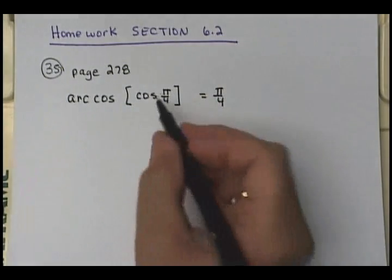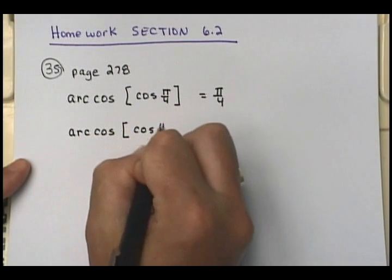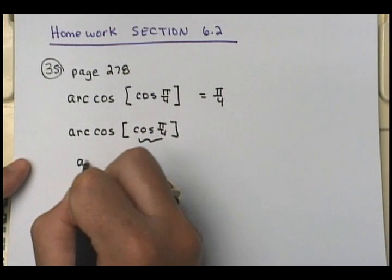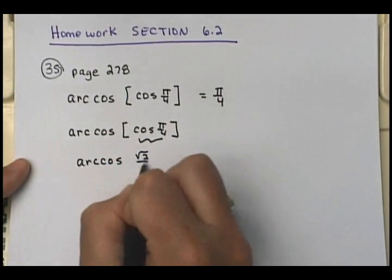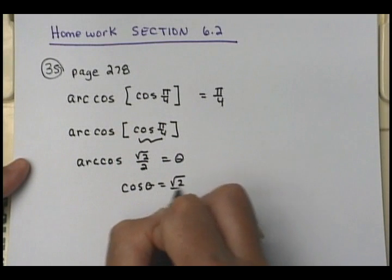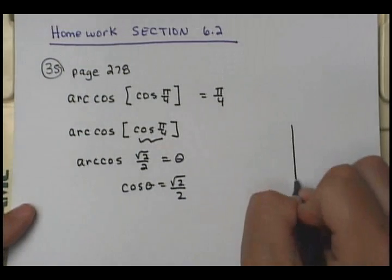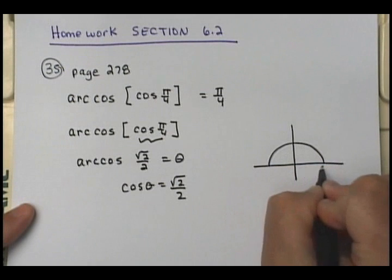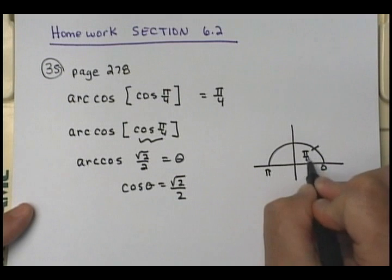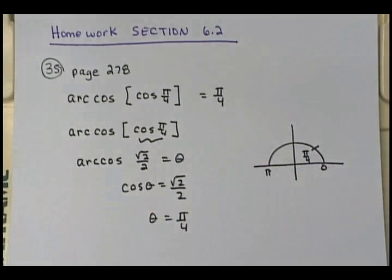Why is that? Arc cosine of cosine of pi fourths — if I let this be theta, what is cosine of pi fourths? It's square root of two over two. If I let that equal theta, then cosine of theta has to equal square root of two over two. Between zero and pi, where is cosine positive? In the first quadrant, where does cosine equal square root of two over two? At pi fourths.